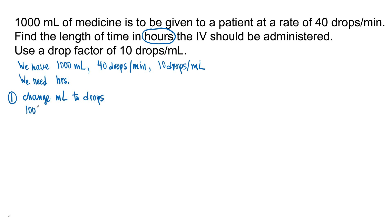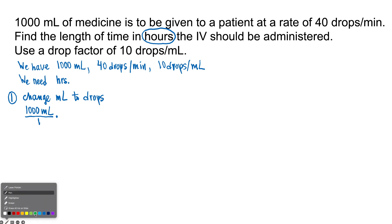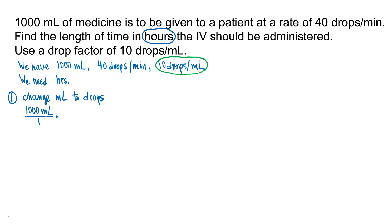We have 1,000 ml. Write what you have as a fraction: 1,000 ml over 1, and prepare to multiply. We are going to take the conversion factor 10 drops per ml in order to change milliliters to drops. We will put milliliters in the denominator so milliliters can cancel out, and put drops on top in the numerator. So: 10 drops per 1 ml.